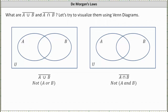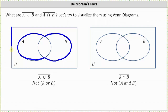We want to determine the complement of the union of A and B, and the complement of the intersection of A and B. Let's try to visualize these using Venn diagrams. The complement of the union of A and B is equal to not (A or B). The union of A and B would be the region in A, or in B, or in both — inside this region here. So the complement of the union of A and B would be outside this region, meaning this region here.